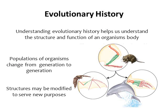For this unity, based on evolutionary relationships, we need to look at evolutionary history. Understanding how organisms are related to each other, or understanding their evolutionary history, helps us to really understand the structure and function of an organism's body. The theory of evolution is the observation that populations of organisms change from one generation to the next over time, and this allows organisms to adapt to their environment.